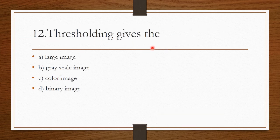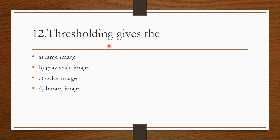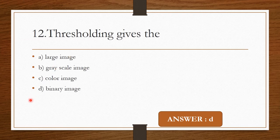Question 11: Thresholding gives — Option A: Large image. Option B: Grayscale image. Option C: Color image. Option D: Binary image. Always remember, thresholding gives only a binary image. Option D is the correct answer.